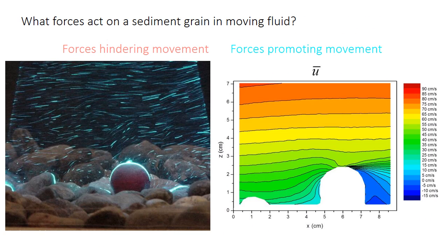Let's first consider the factors that control whether a sediment particle will move in a water flow or whether it won't. Think about a spherical particle sitting on the bed — the blue lines visible here are luminescent particles moving through the water. This larger spherical particle will move if the forces that promote movement outweigh the forces that hinder movement, and it will sit still if the hindering forces are greater.